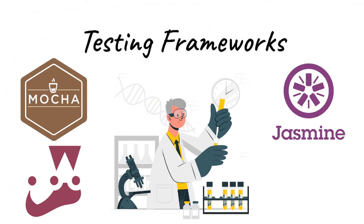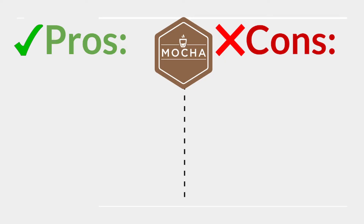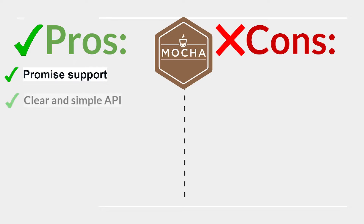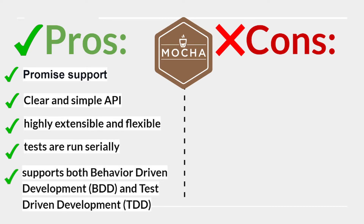Testing frameworks. Mocha.js is a simple, flexible, and fun JavaScript test framework for Node.js and the browser, released in 2011. Used by Coursera and Asana. Pros: promise support, clear and simple API, highly extensible and flexible, and tests run serially.